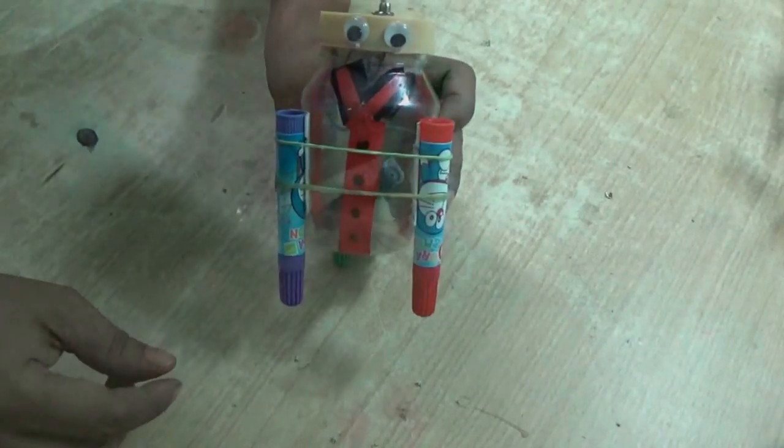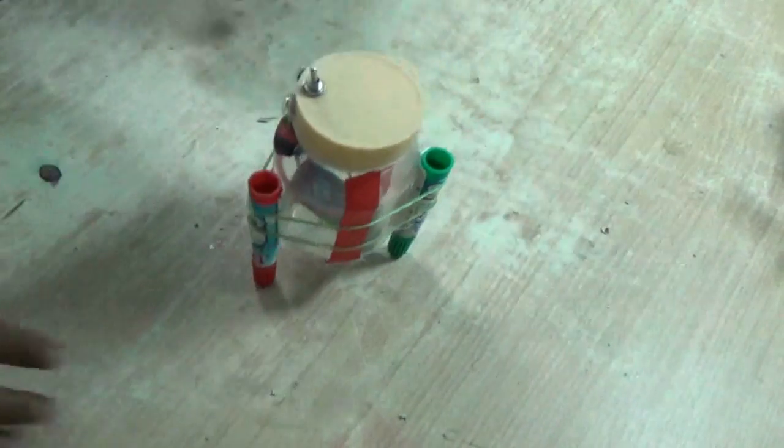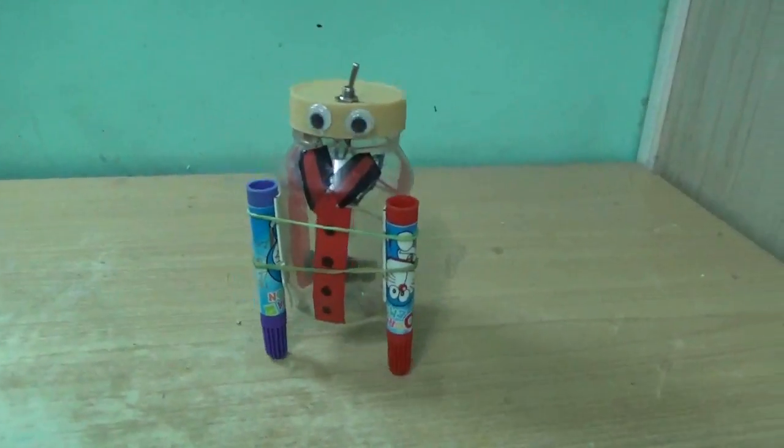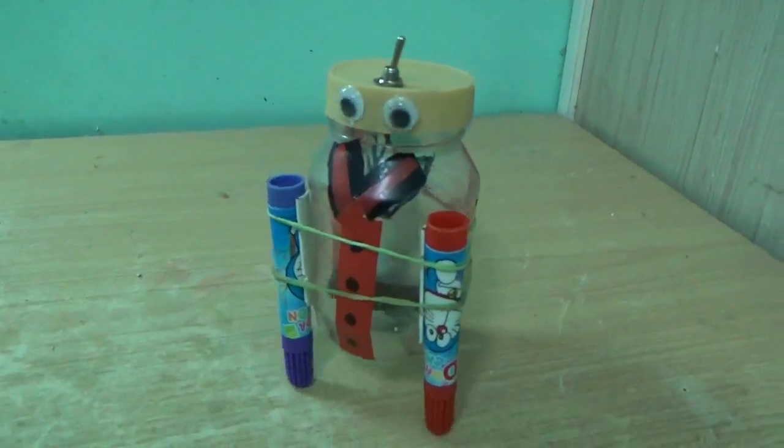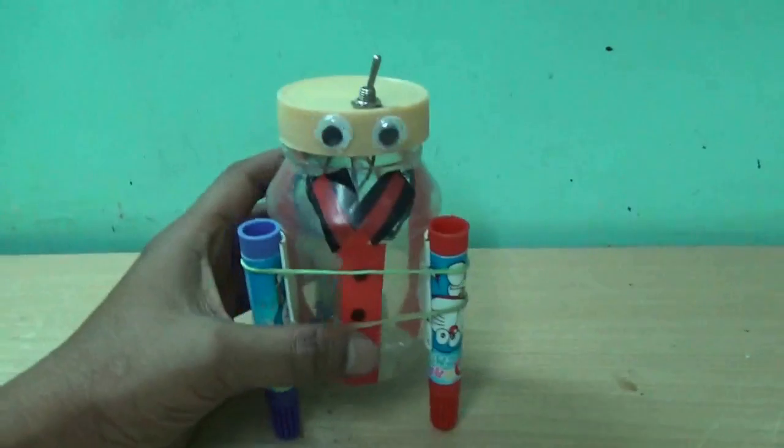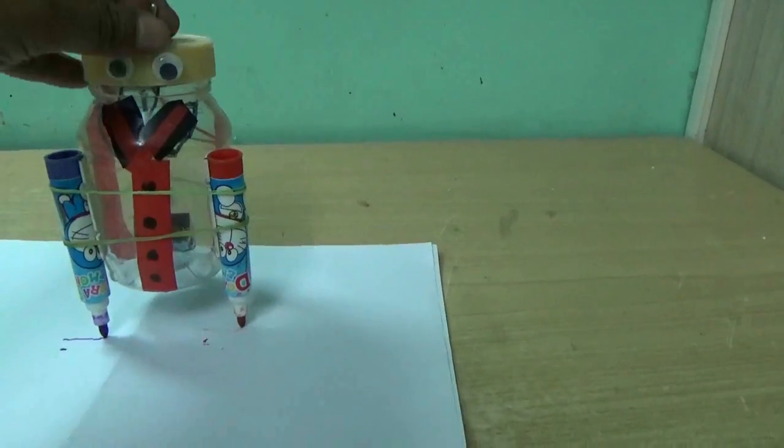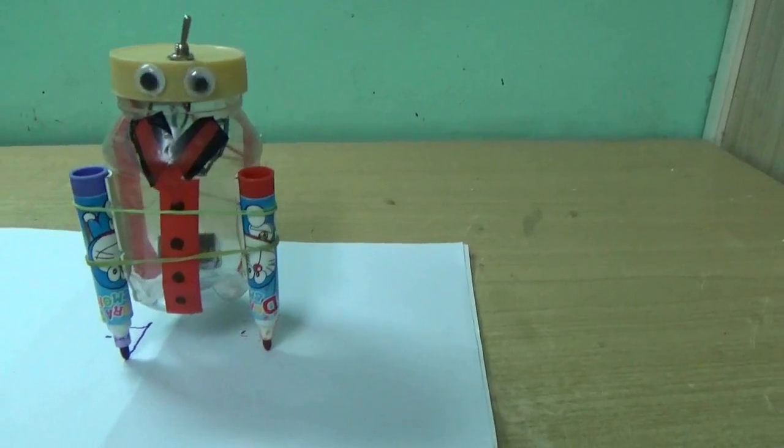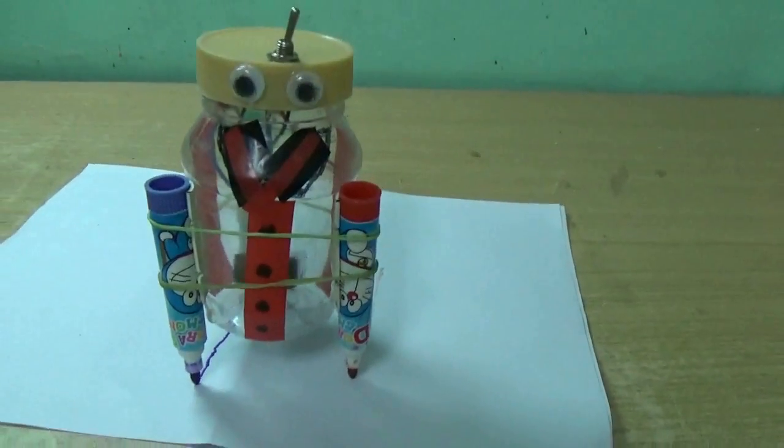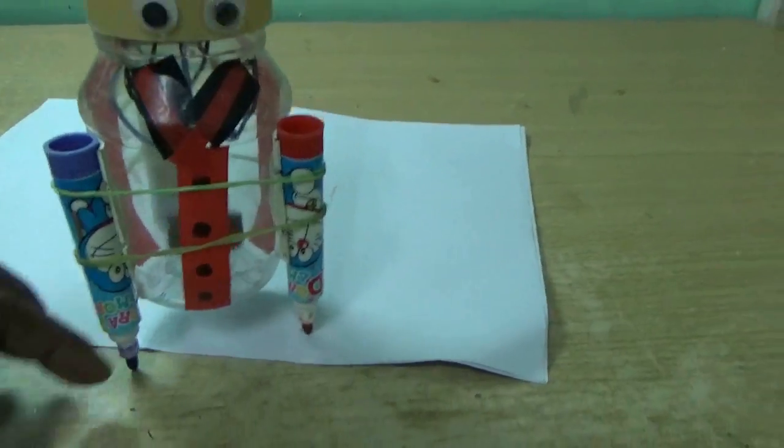Now if you switch it on, it will move randomly because of the vibration. Remove the caps of the sketch pens when you want to draw and put it on top of a white paper. See, it's randomly moving and drawing something.